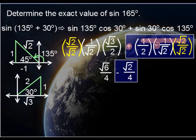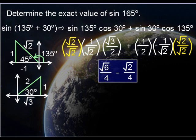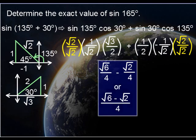So that's really it. You might also see this answer written in a different manner because of the fact that these have a common denominator. Or even if they didn't have a common denominator, a lot of times people will join these together as one fraction. So you might see it as root 6 minus root 2 all over 4. This is perfectly fine.